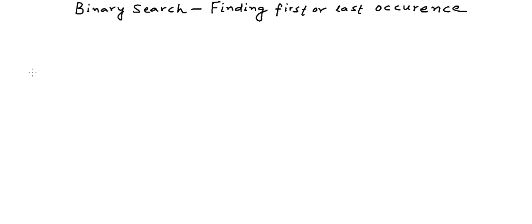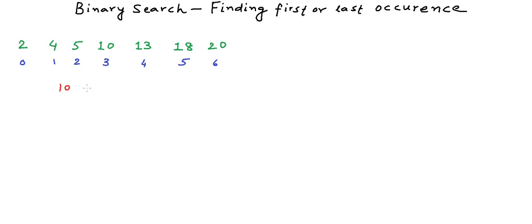In the previous lesson we saw the implementation of binary search in its basic form. We solved a problem where, given a sorted array of integers, we want to find out whether a number exists in the array or not. Our algorithm returns the index if found — for example, 10 exists at index 3 — or returns that the number does not exist in the array, for example when searching for 11.